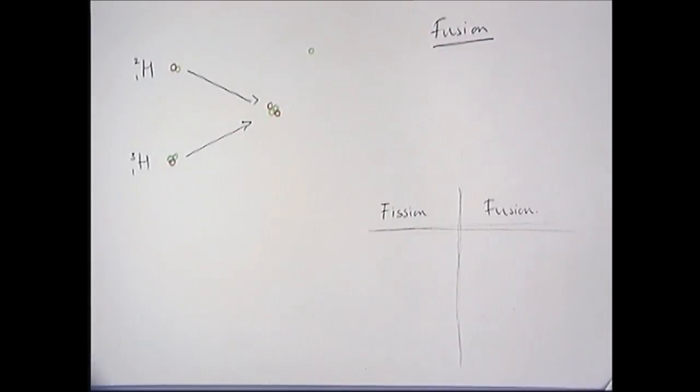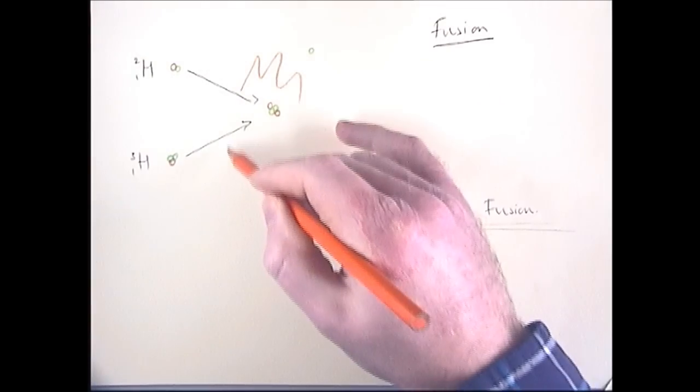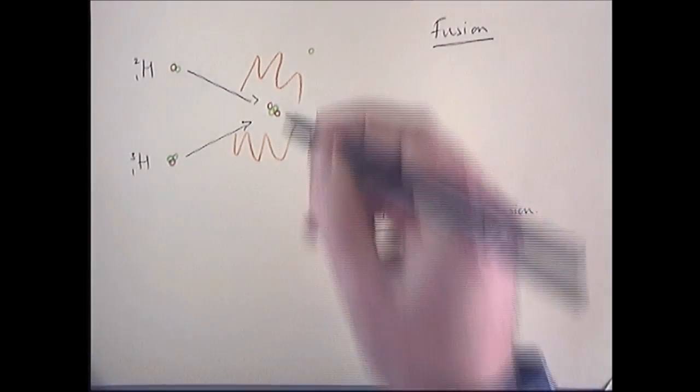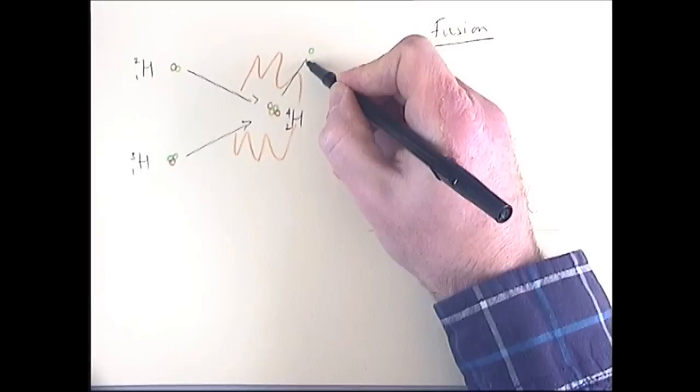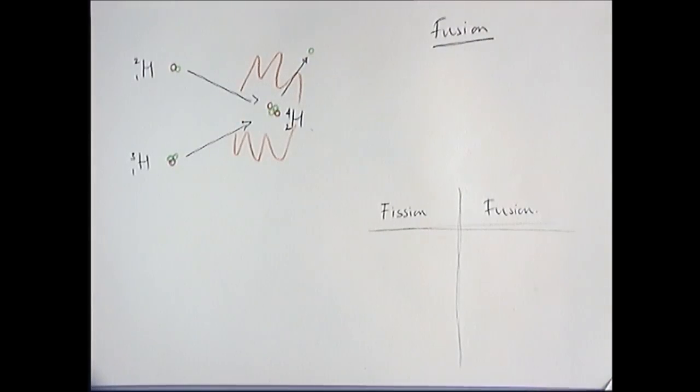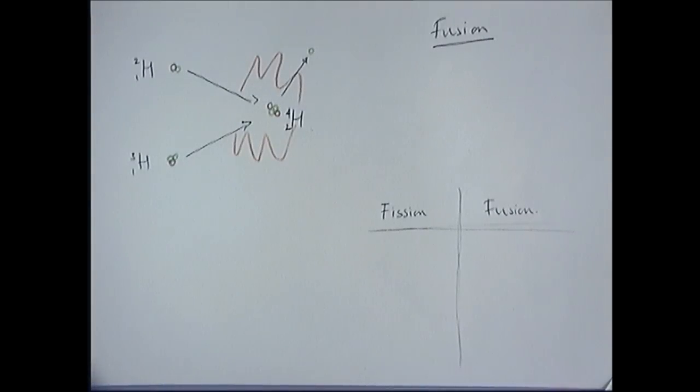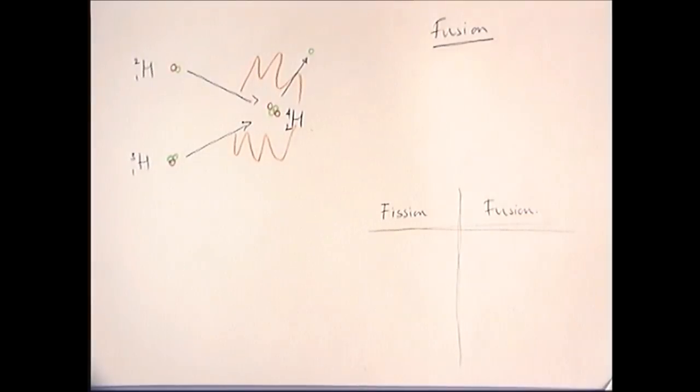Those two are forced together. They have to be forced together because they're both positive, so they repel each other. You need very high temperature and pressure. They're forced together under very high temperature and pressure and they join to make helium. Also released is the one spare neutron, which travels very fast with very high kinetic energy. This is the process by which stars release energy and make new elements inside stars.